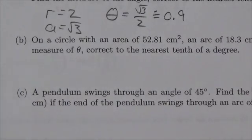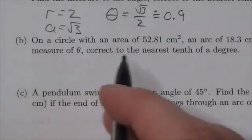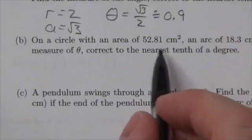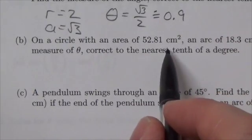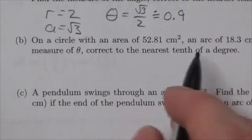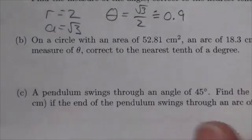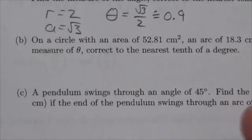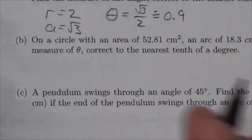Hi, everybody. This question says that on a circle with an area of 52.81 centimeters squared, an arc of 18.3 centimeters subtends the central angle, and we're going to find that angle.